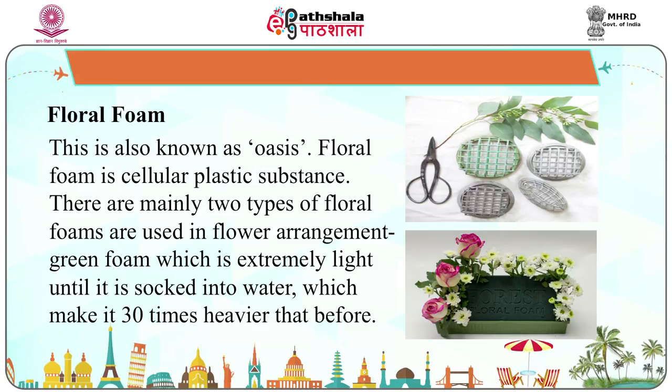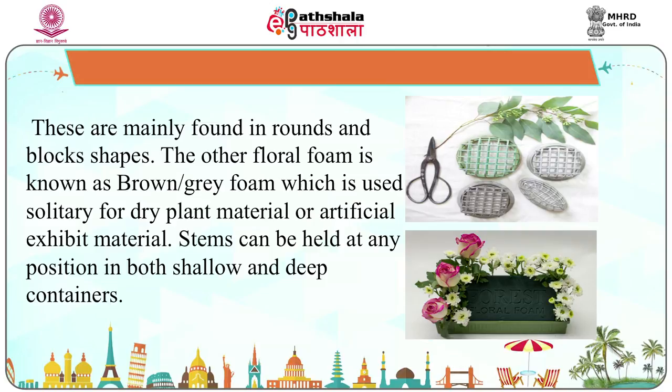The second example of mechanics is floral foam, also known as oasis. Floral foam is a cellular plastic substance. There are mainly two types: green foam, which is extremely light until it soaks up water, making it 30 times heavier, found in round and block shapes; and brown-grey foam, used solely for dry plant material or artificial exhibit material. Stems can be held at any position in both shallow and deep containers.